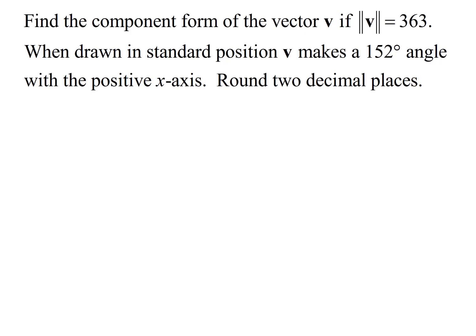We want to find the component form of a vector if the magnitude is 363, and if it's drawn in standard position, it makes a 152 degree angle with the positive x-axis.